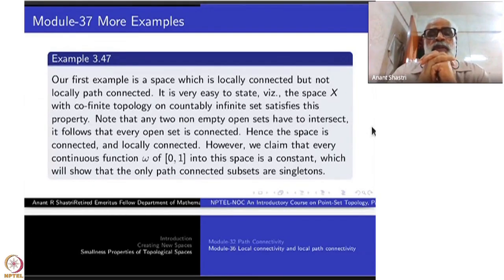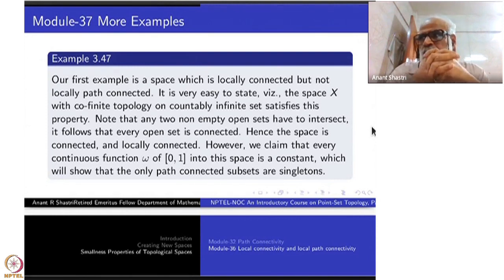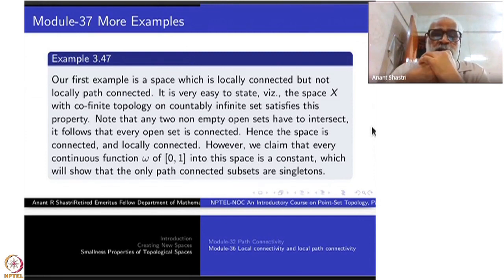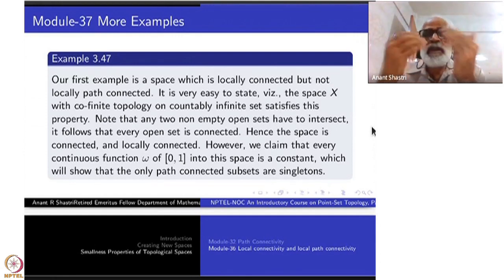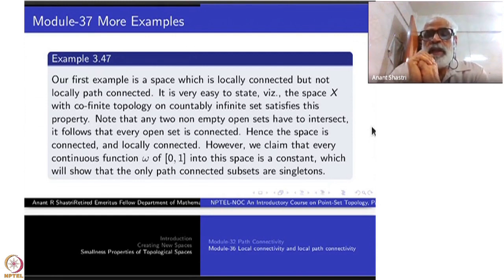Welcome to module 37. Last time we introduced the notion of local connectivity and local path connectivity and proved a few results. Today we will examine a number of illustrative examples — either counter-examples or positive examples. The first example is one you have already met; it is very easy to state.